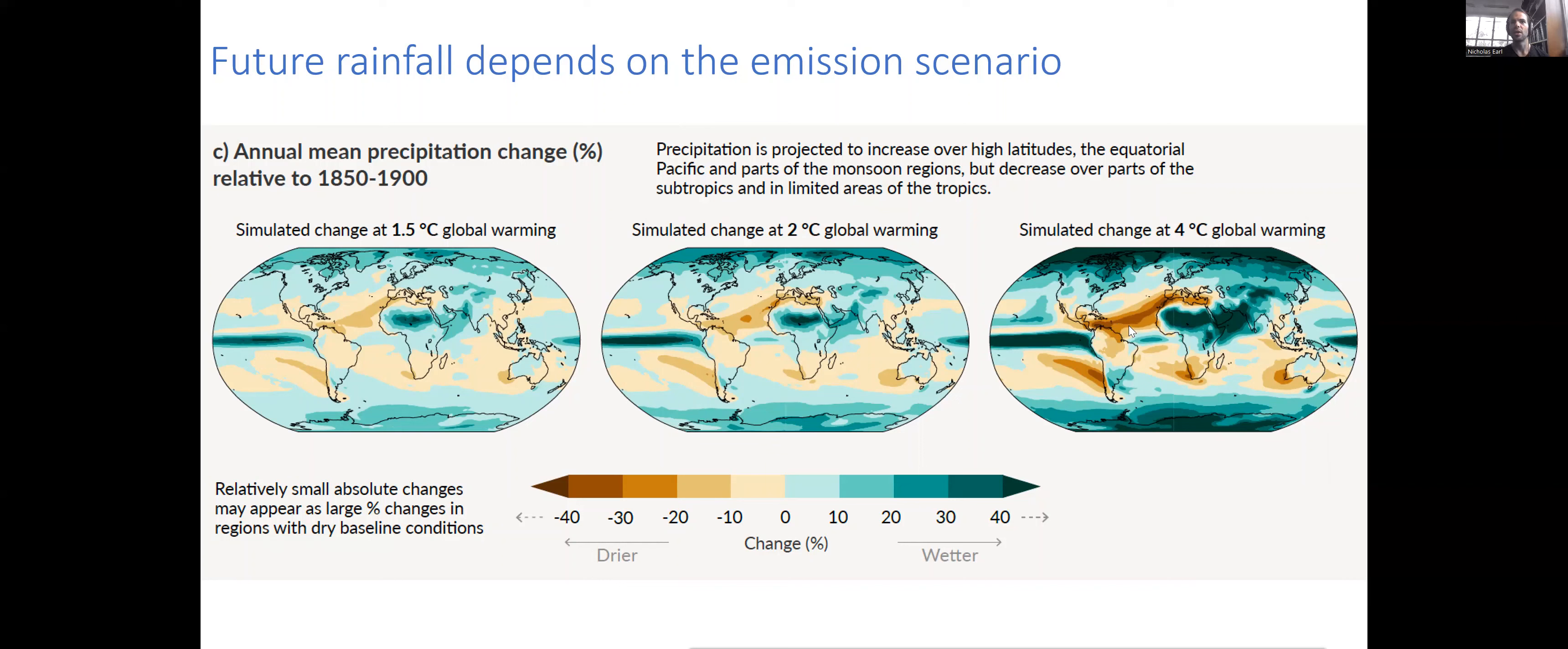As you can see, the world is going to get wetter in places like the Sahara on the equator, on the poles, for example, and then drier in certain spots like the Caribbean, the Mediterranean, south of South Africa, and then Australia - southwest WA especially. The rest of Australia is not that strong a signal, and it looks like it's going to get wetter off the coast of Tasmania.